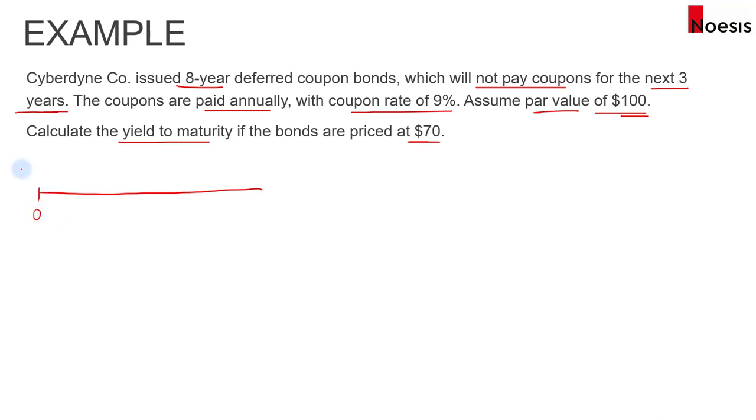At time 0, the investor will pay $70 to buy the bond. For the first 3 years, there will be no coupons, so that's 0 for the 3 years. The coupon will be 9% times 100, for a coupon of $9.